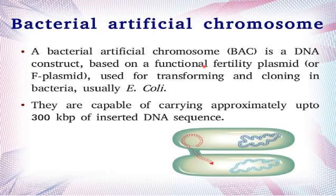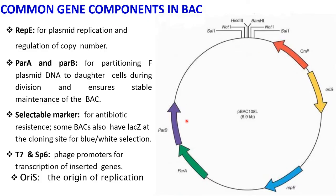BAC vectors are capable of carrying approximately up to 300 kb of insert DNA sequence. The common gene components of BAC include repE, which is the site for plasmid replication and regulation of copy number, and parA and parB for partitioning F-plasmid DNA into daughter cells during division.